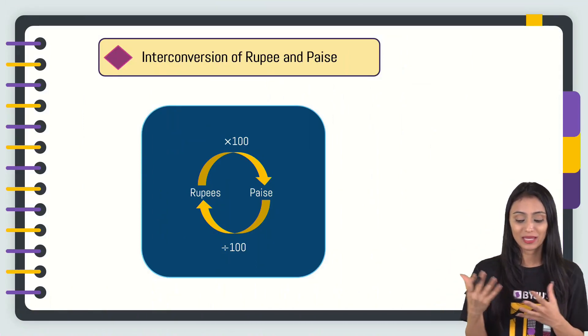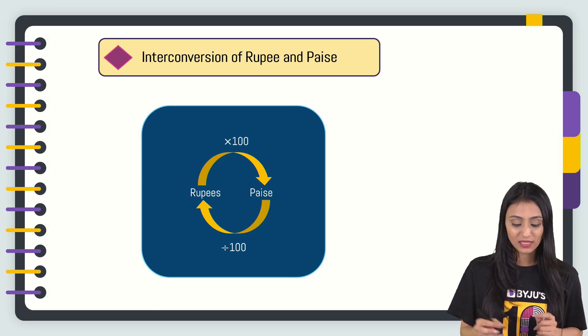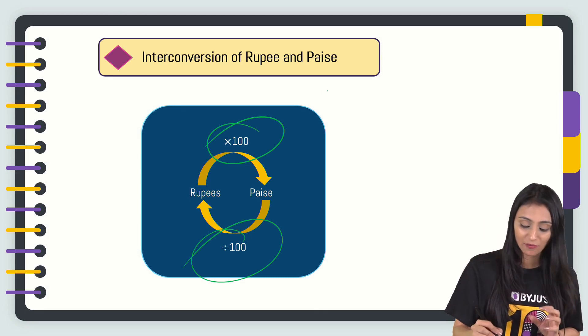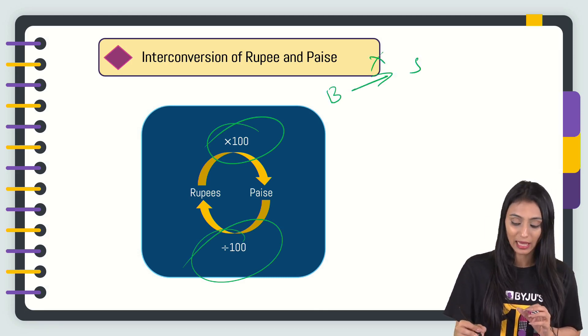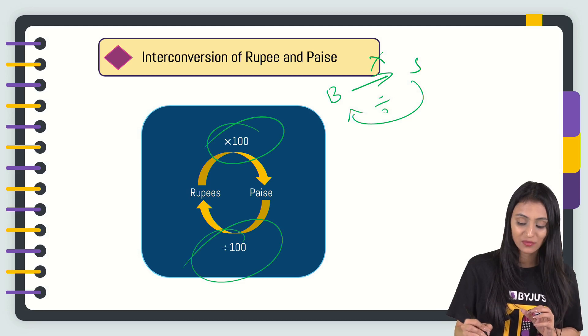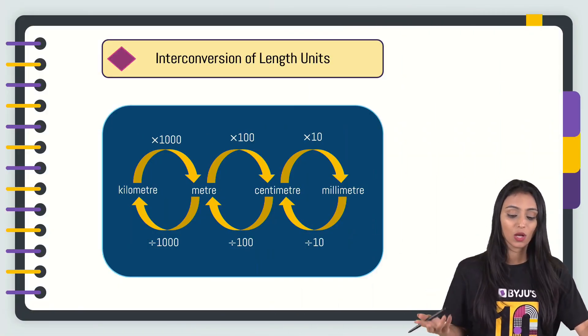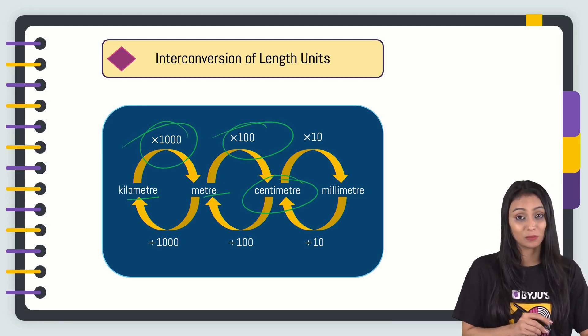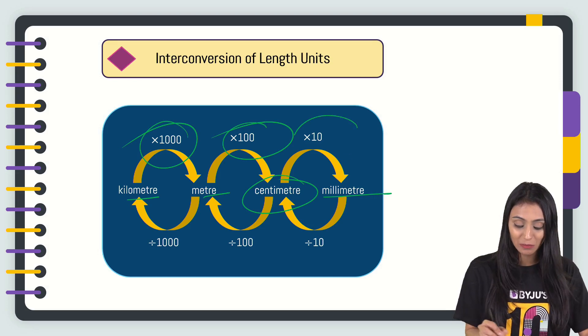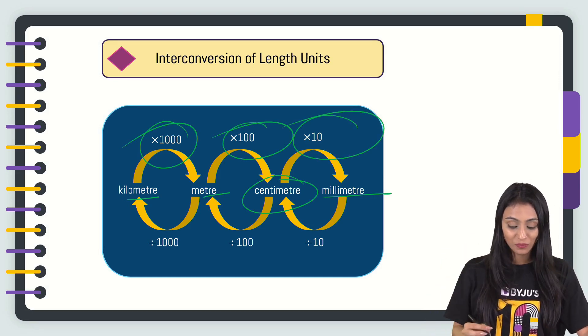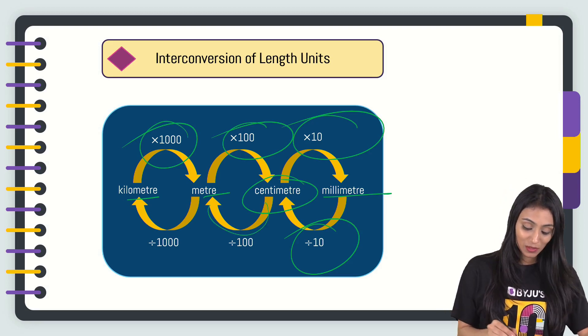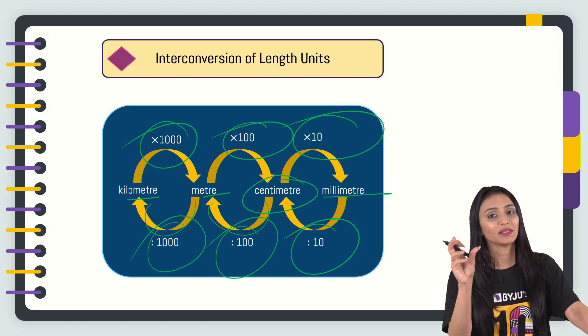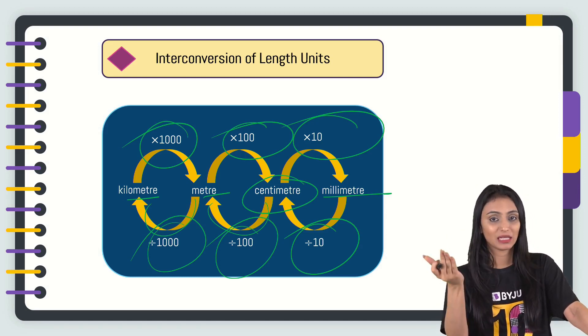First, we'll be talking about interconversion of rupee and paisa. For converting from rupees to paisa, we simply multiply by 100, and from paisa to rupee, we divide by 100. Just remember one simple thing: whenever we go from bigger to smaller units, we multiply. Whenever we go from smaller to bigger units, we divide. In a similar manner, for interconversion of length units, from kilometer to meter we multiply by 1000, meter to centimeter multiply by 100, centimeter to millimeter multiply by 10. Similarly, when going from millimeter to centimeter, divide by 10, centimeter to meter divide by 100, meter to kilometer divide by 1000.